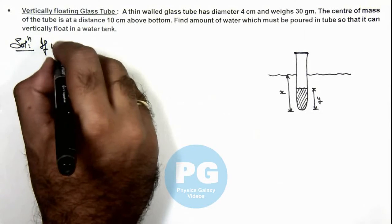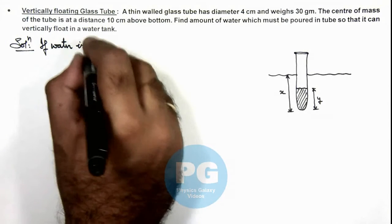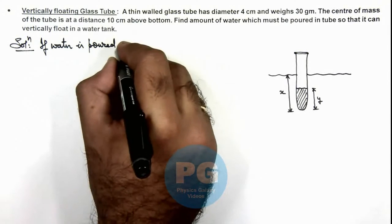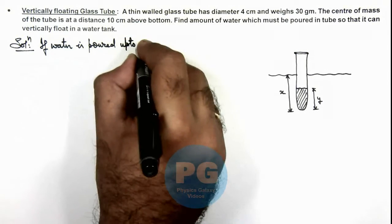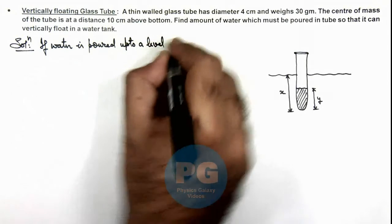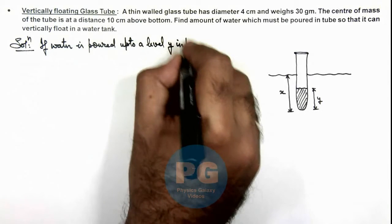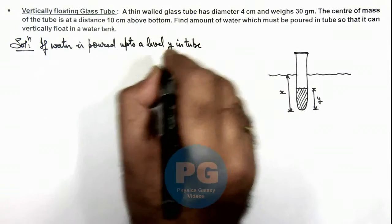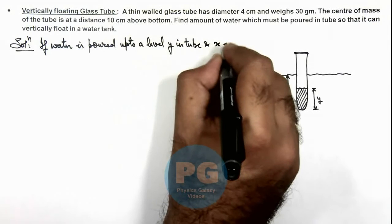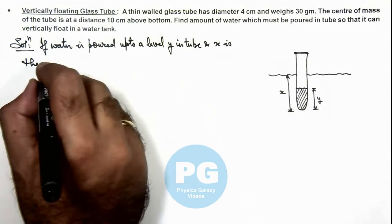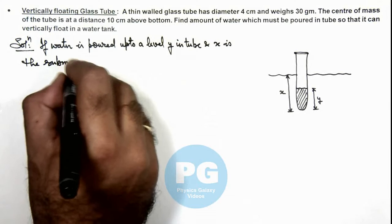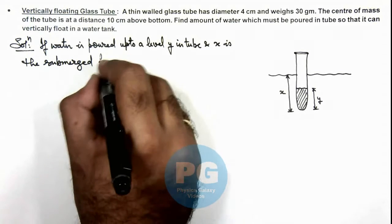If water is poured up to a level y in tube which we can see I've drawn in the figure. And x is the submerged length of tube.